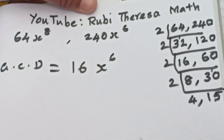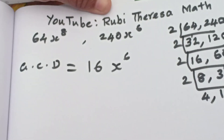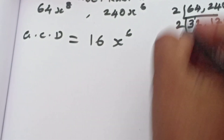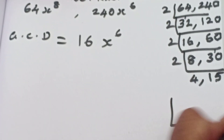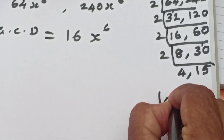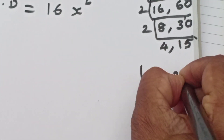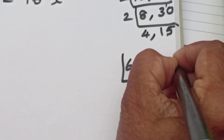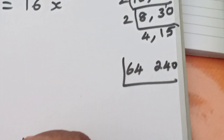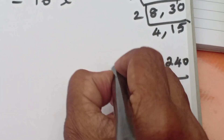So what is the GCD? 16 x to the power of 6. If you know this, just you can write it directly.